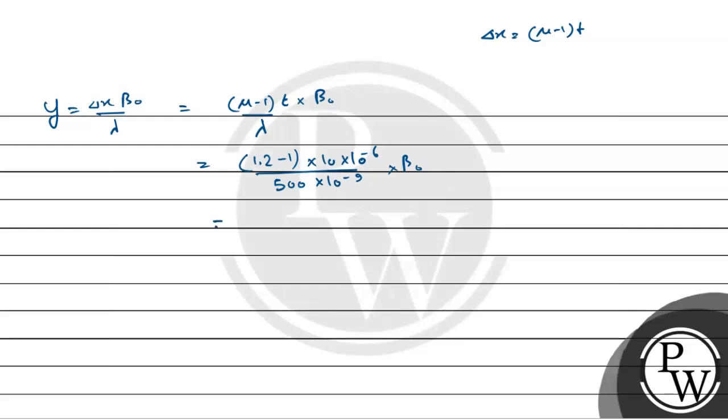So this equals 1.2 minus 1 into 10 into 10 to the power minus 6 by 500 into 10 to the power minus 9 into beta naught. So this is equal to 4 beta naught.